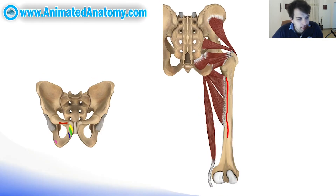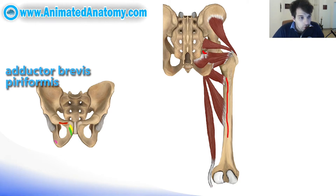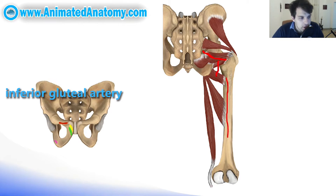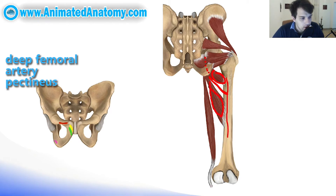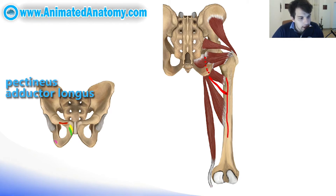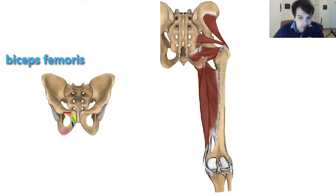We have to remove the semimembranosus and also the adductor brevis. Right under the piriformis muscle there is the inferior gluteal artery sending its branches to our region to supply our muscles. Besides that, there is the femoral artery sending off its branch, the deep femoral artery, that runs between the pectineus muscle and the adductor longus, and after that continues going downwards behind the adductor longus and now the biceps femoris.